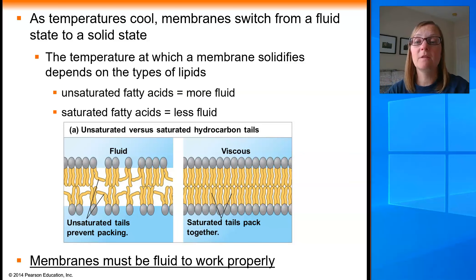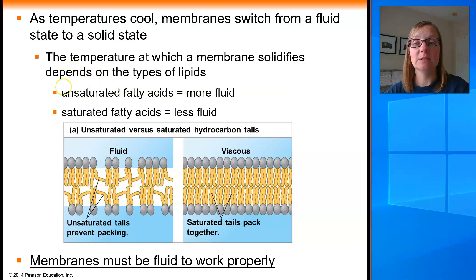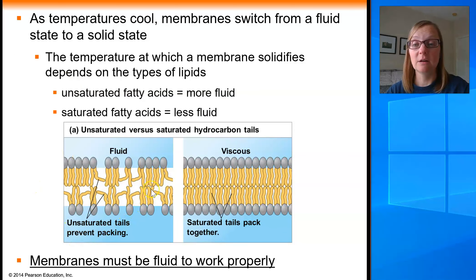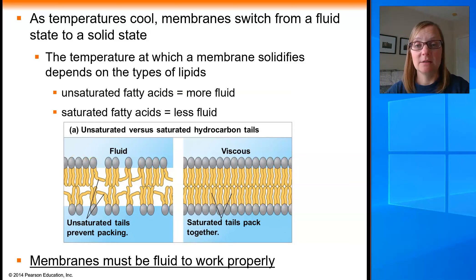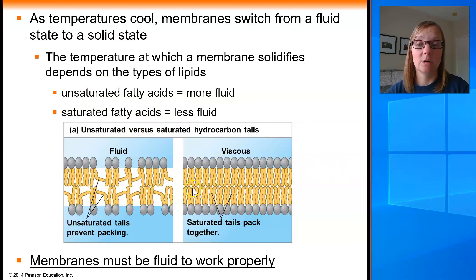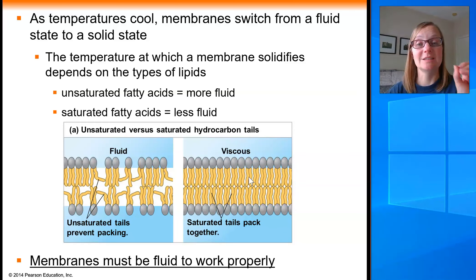If you use unsaturated fatty acids — those with a double bond between carbons and a kink in the tail — to build your phospholipids, this creates a membrane with more fluidity, meaning it moves more and is less viscous. In image A, a higher proportion of unsaturated fatty acids creates phospholipids with a kink in their tails, and that kink prevents the phospholipids from packing too closely together, maintaining more fluidity by making the membrane less dense. On the other hand, if you use more saturated fatty acids, you get a more viscous membrane because those straight-tailed phospholipids can pack much closer together, making the membrane more dense and less fluid.